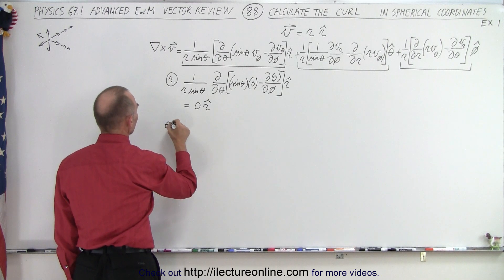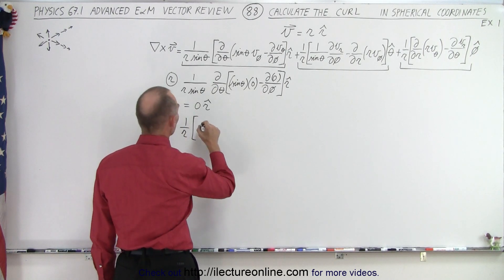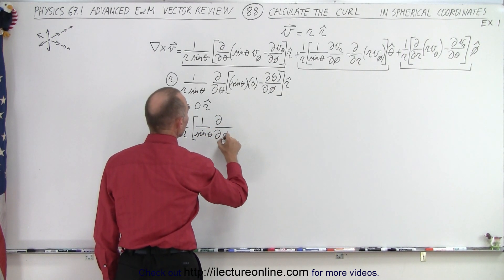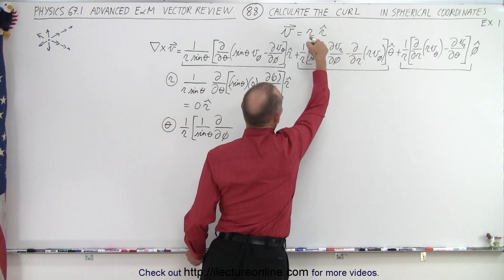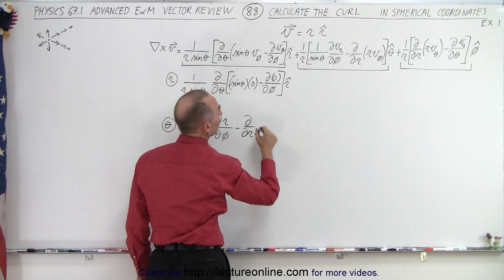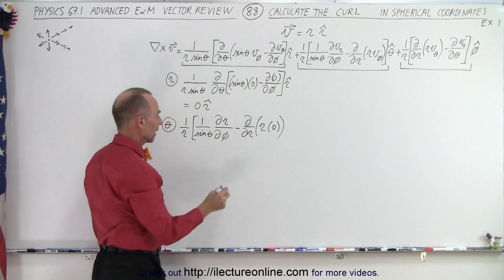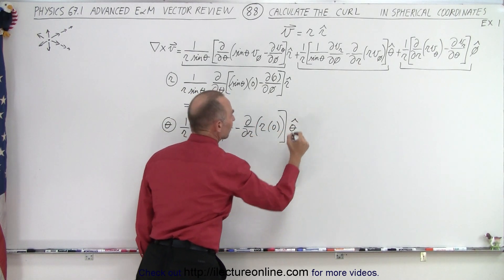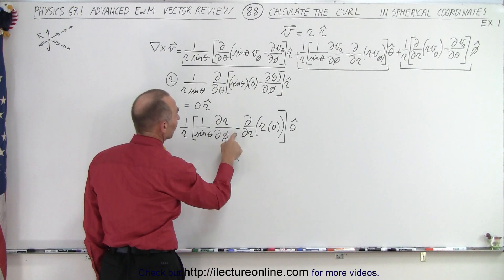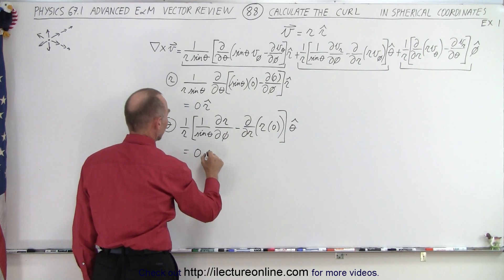Now let's do the Theta direction. We have 1 over R times 1 over the sine of Theta times the partial derivative with respect to Phi of the R component of V — we do have an R component, which is R — minus the partial derivative with respect to R of R times the Phi component of the vector, which is zero. The partial derivative of R with respect to Phi is zero, minus the partial derivative of R of zero is zero. So again, we have zero minus zero — this is equal to zero in the Theta direction.